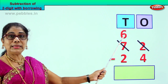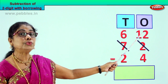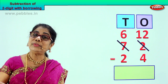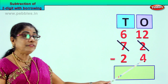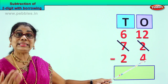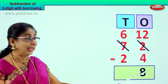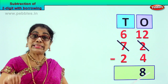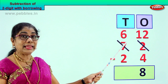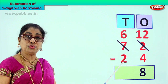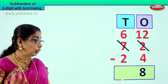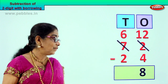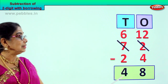We borrow 1 from here, so there is 6 left — 7 take away 1 is 6. Now 1 ten plus 2 ones gives you 12. We got 10 from the tens side and 2, making 12. Now we will do 12 take away 4. 12 take away 4 is 8. So from 12 take away 4 is 8, and here you have 6. 6 minus 2 — 6 take away 2 is 4. Your answer is 48.